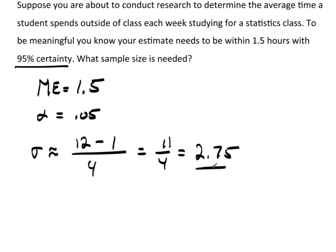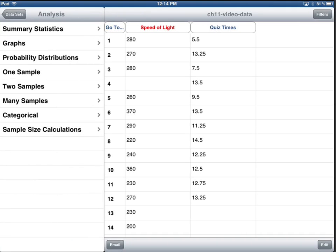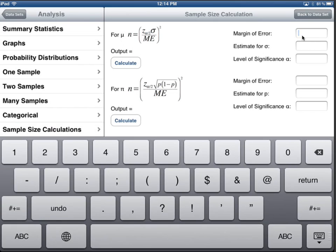So if I jump over to TC stats, select analysis methods without data, or actually it doesn't matter because select my data, sample size calculations is what I want. And this time it's for mu. And this is actually the formula I'm using. The margin of error, we said, was 1.5. The estimate for sigma, we said, was 2.75. And the significance level, alpha, was .05.